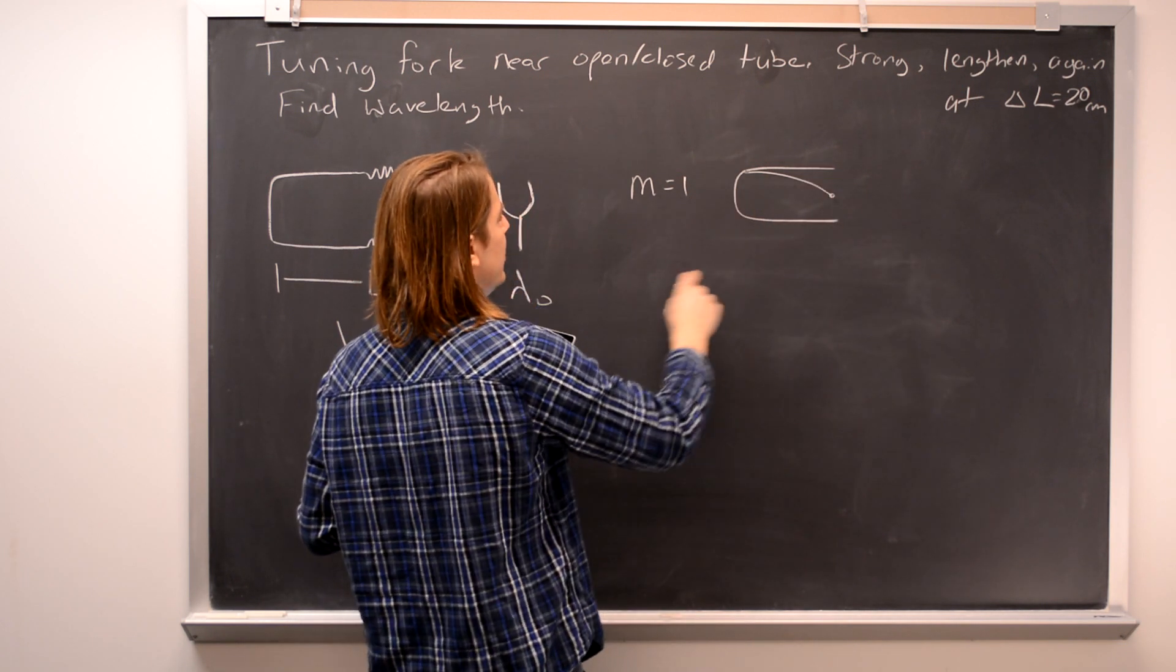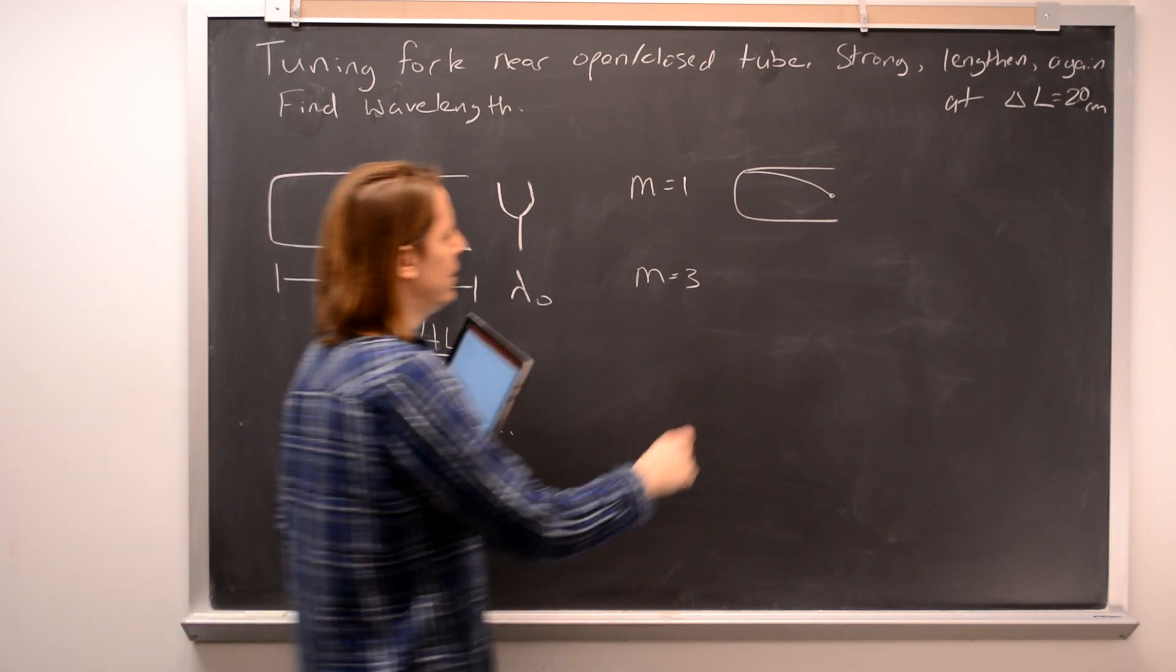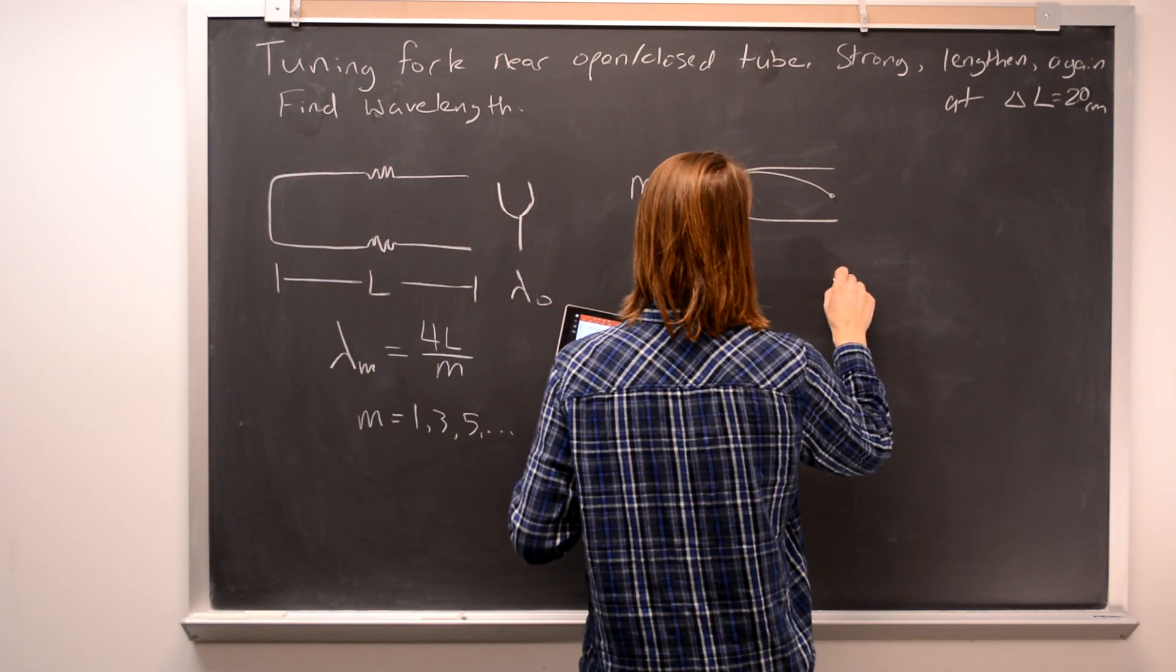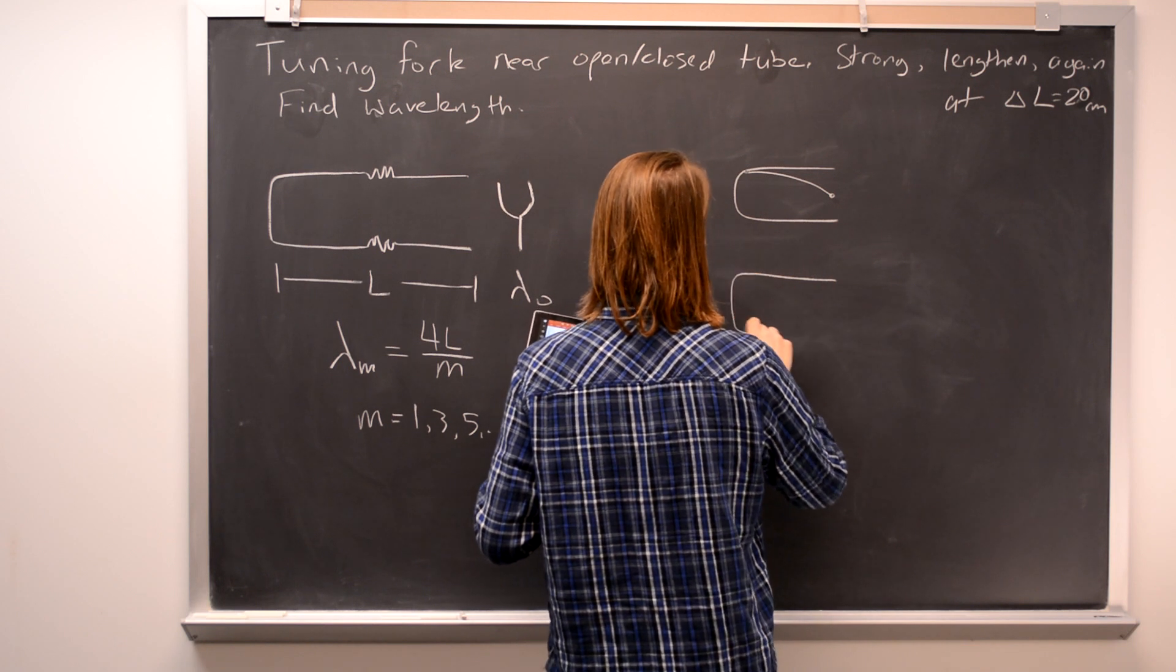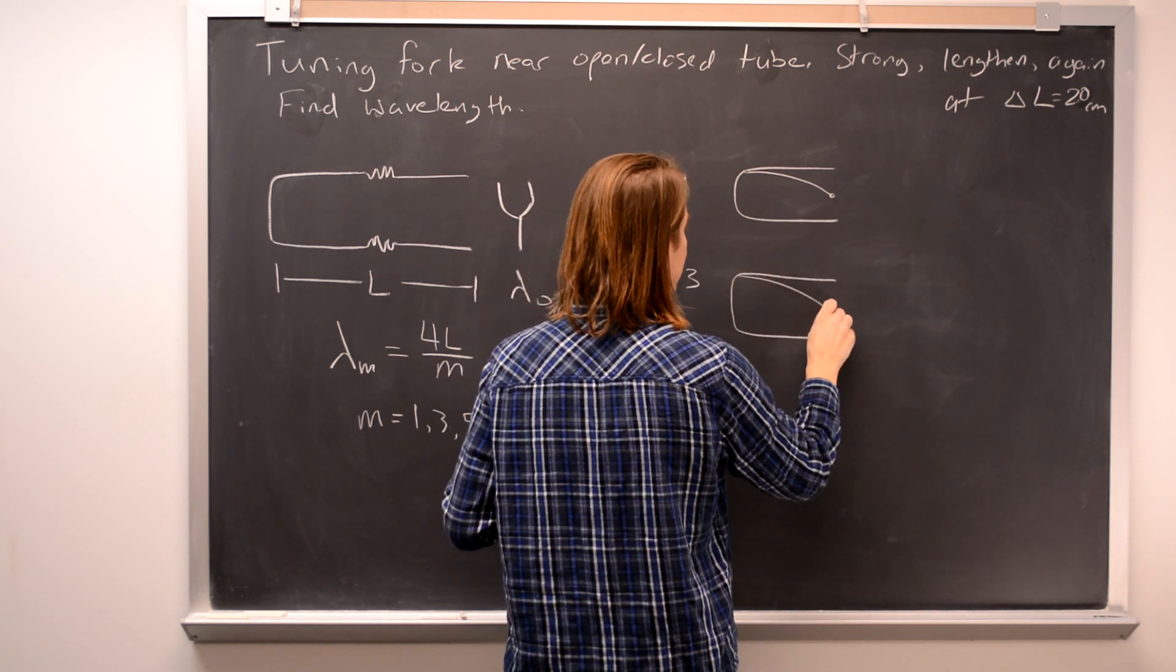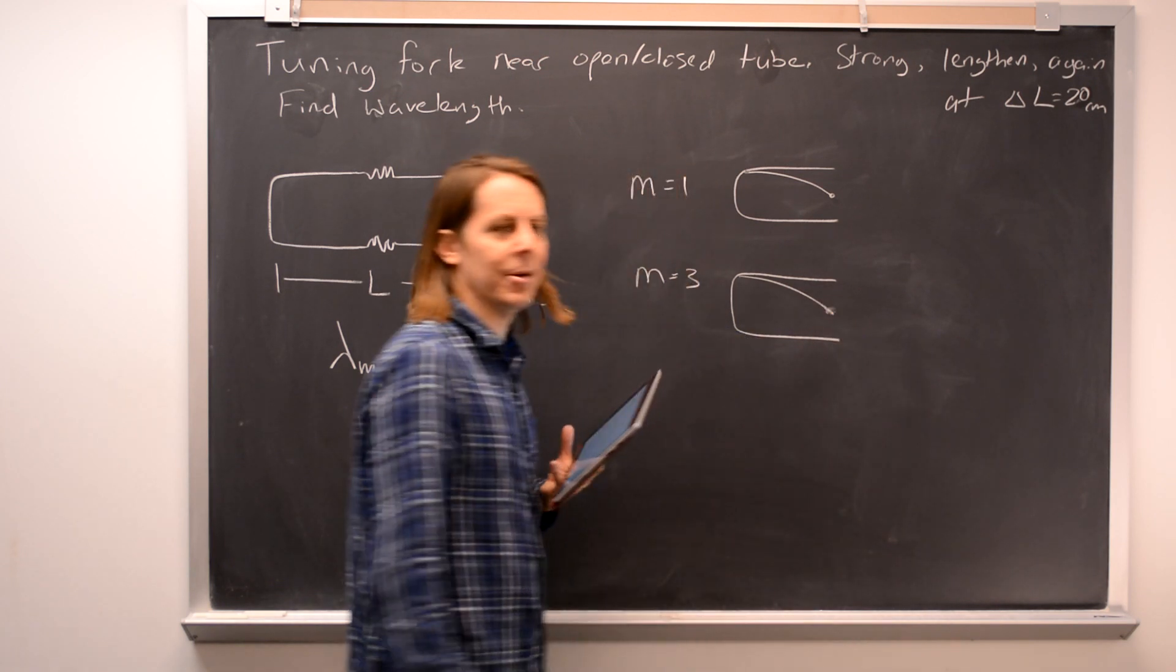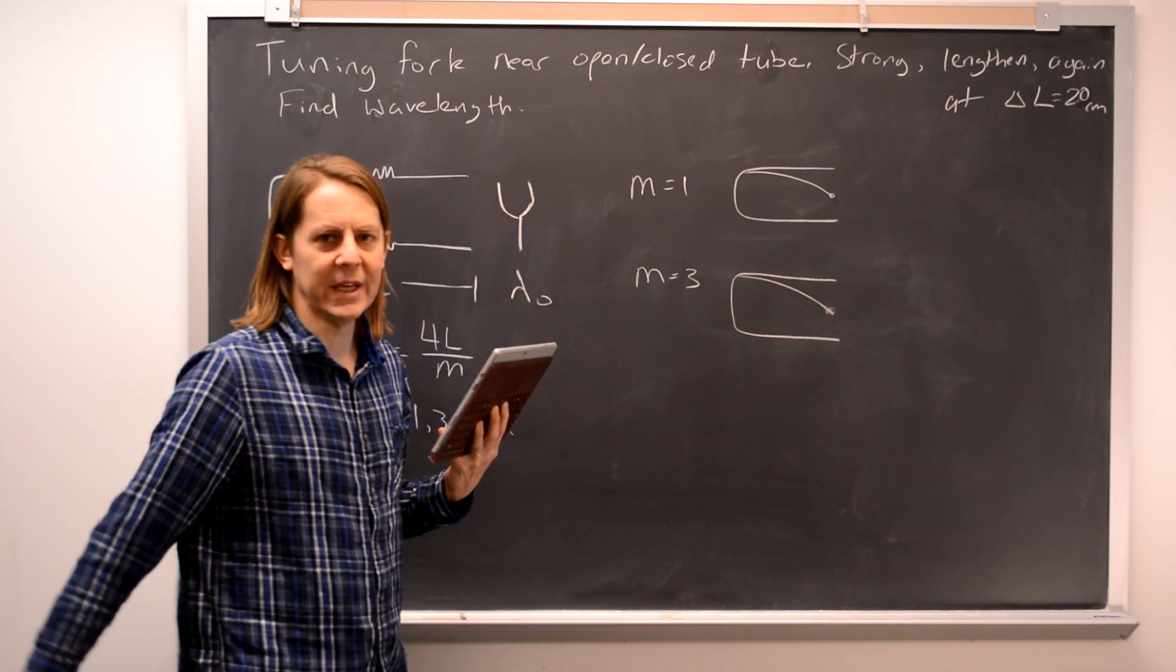So you say that's the original length, and then you say let me draw M equals 3, the second mode. Let's see, so for that one, the best way to draw it, to see it, is to draw this part the same. Say, okay, I've got to have a node at that point, but this has to be longer until that can be a node again.